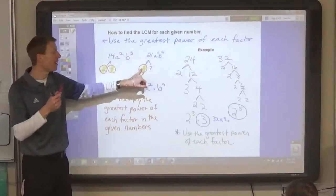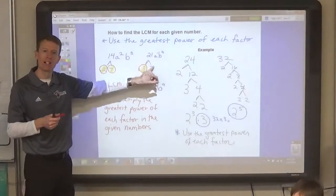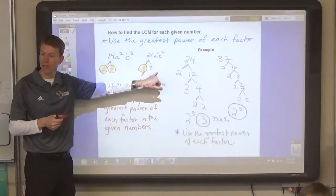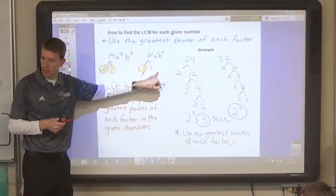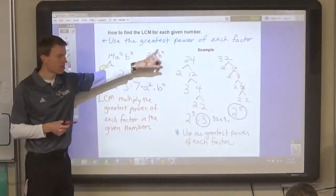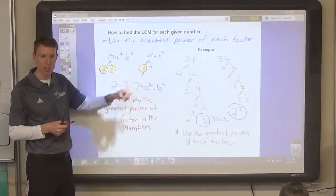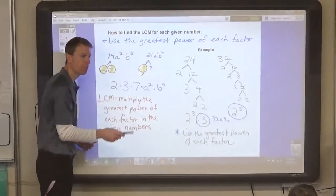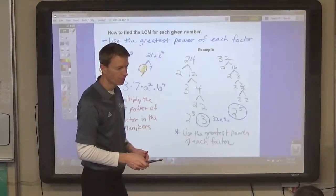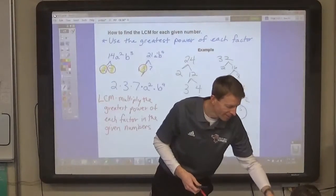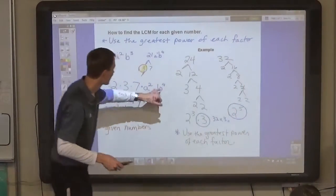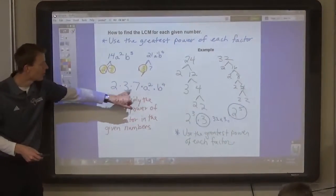So, if it was 147 and there were two 7s, then we'd have to use two 7s. Because that's the greatest power in this number. Use the greatest power of each of the type of factors.